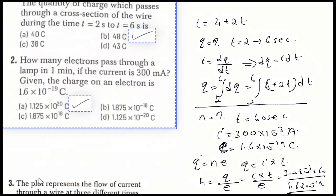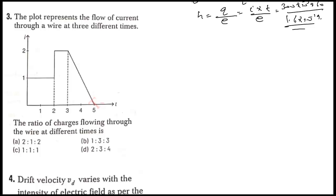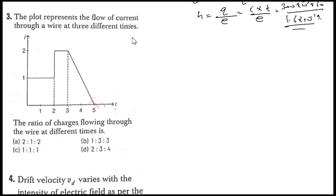The third question: a plot represents the flow of current through a wire at three different time intervals. We need to find the ratio of charges flowing through the wire at different times. The time intervals given are: 0 to 2, 2 to 3, and 3 to 4.